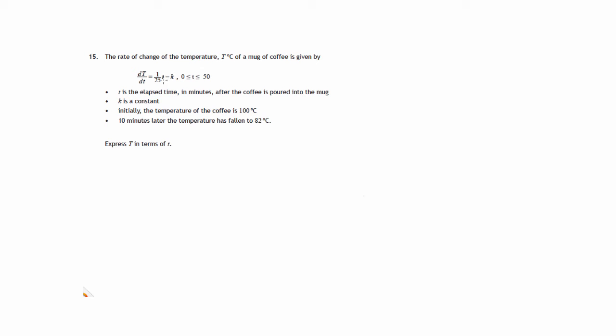this formula involves little t which is the time elapsed in minutes after the coffee is poured into the mug. So it'll start at t equals zero and then there's a constant at the end minus k. And we're told that initially the temperature is 100 degrees.